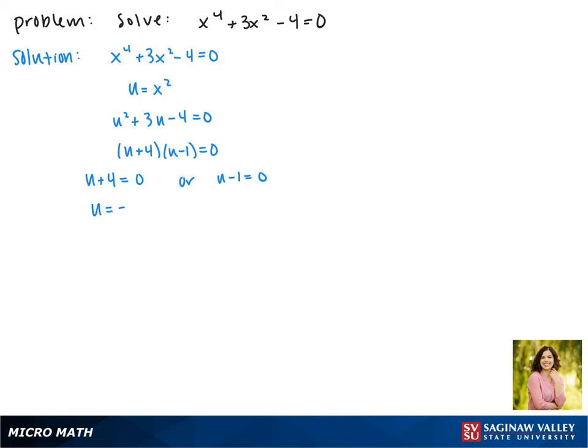Moving forward to the other side, this gives us u equals negative 4 or u equals 1, but we're trying to solve for x. So now we're going to plug x squared back in.